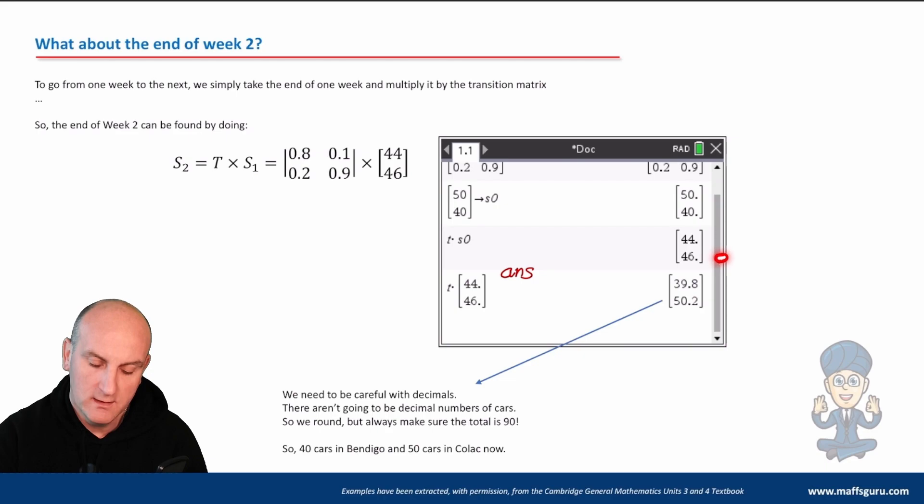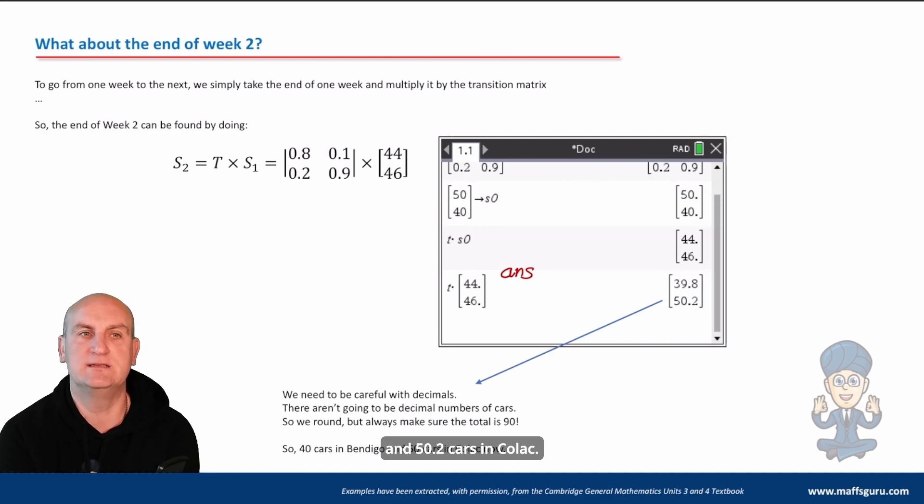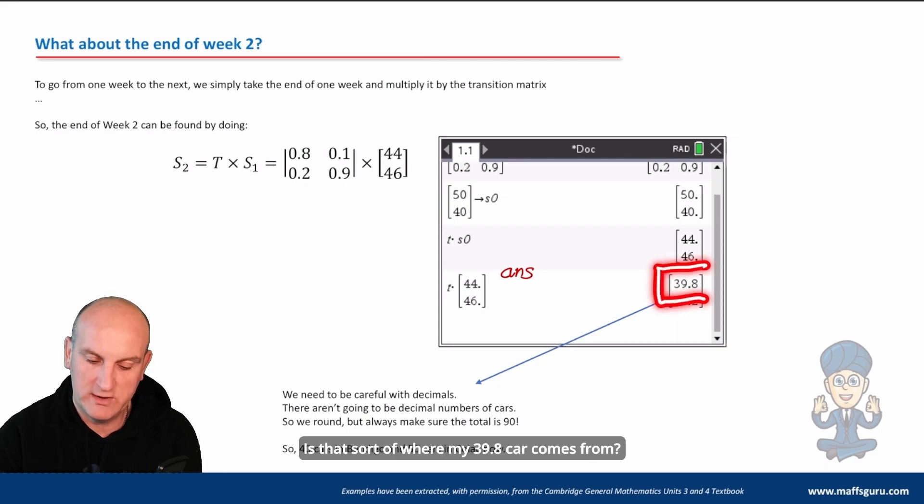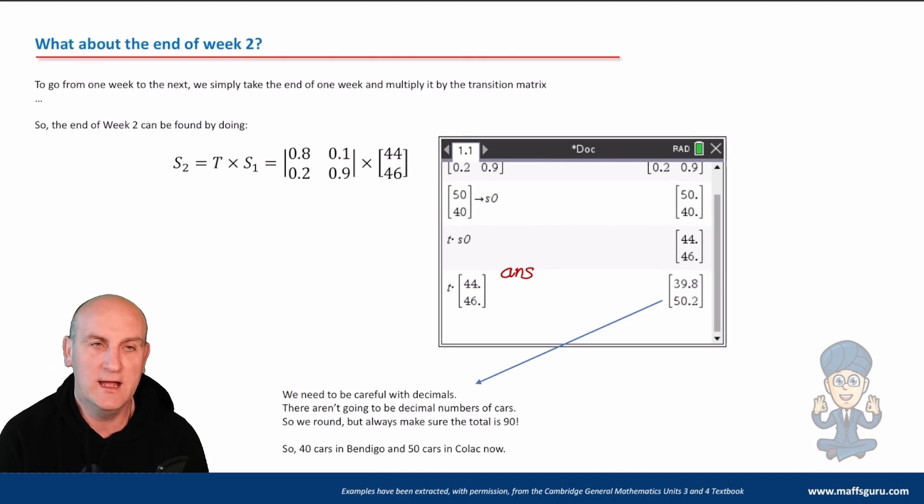Yeah, well my calculator doesn't realize we're dealing with whole numbers of cars. Why should it? It's not very clever. And what it's told me is now I've got 39.8 cars in Bendigo and 50.2 cars in Colac. Well, that doesn't work. What, has somebody returned a car without a tire? Is that sort of where my 39.8 cars comes from? A tire's fallen off and they've just gone, 'I'm so sorry, your cars are so rubbish it lost the tire.' No, your calculator is basically doing what it does. It does the math for you. You have to interpret this.